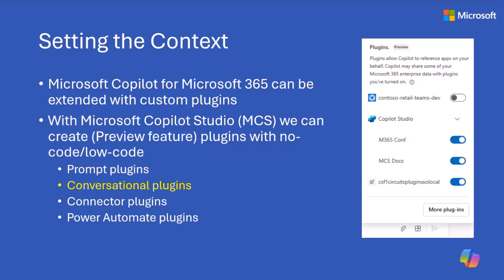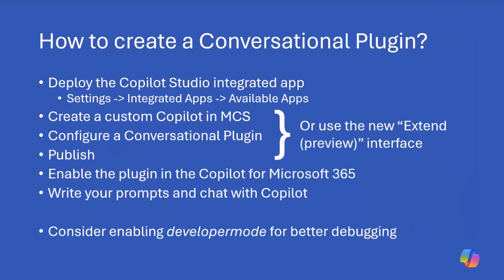Whenever we have a plugin, it means that when we are in the Microsoft 365 Copilot chat, we can click on a small button in the lower right corner and activate a bunch of custom plugins to improve the content and quality of the response we get back from Copilot. When we want to do that using Copilot Studio, we have to follow these steps.